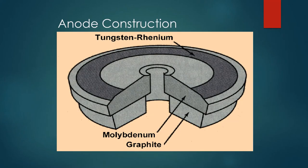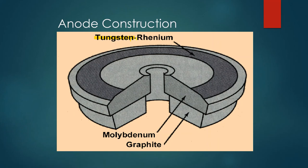The x-ray tube's anode is made of tungsten, which has a high enough atomic number to efficiently create x-rays. Usually the tungsten is alloyed with rhenium. All target interactions occur in the outer layers of the target, so the lower layers can be made of cheaper, softer metals like molybdenum and backed with graphite.